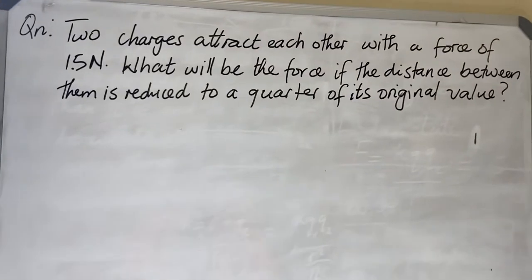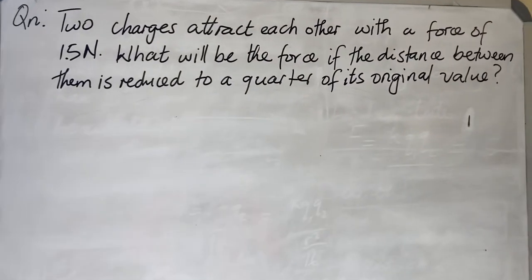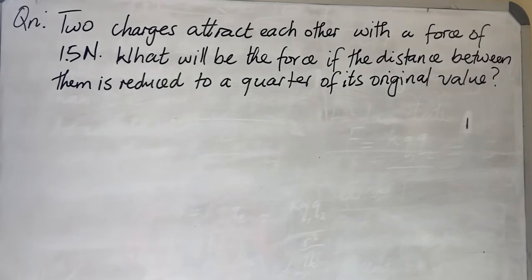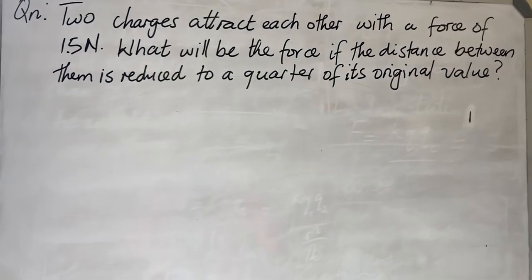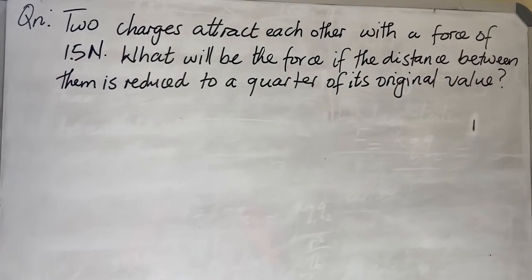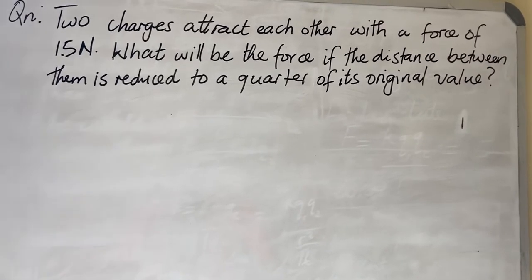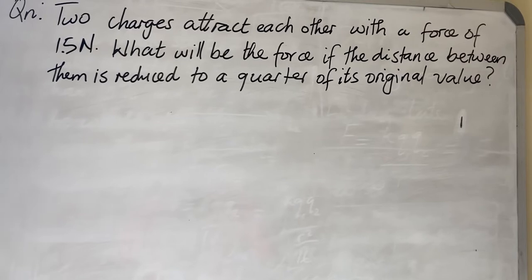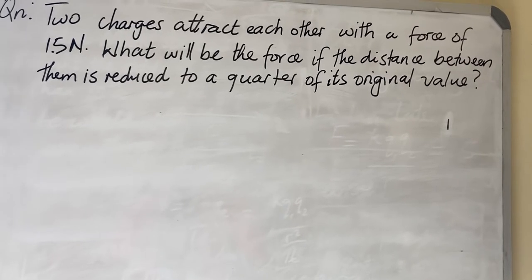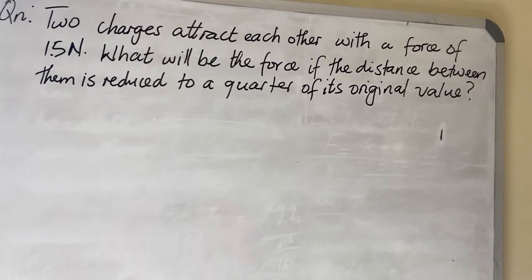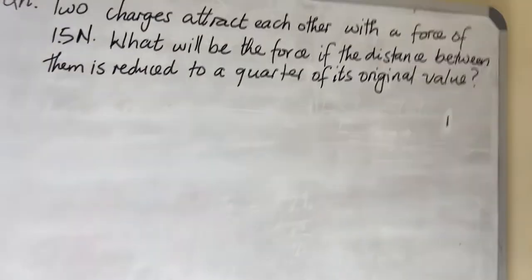Good day ladies and gentlemen, okay I'm back again. I've been asked this question by someone, they asked me like how would we solve something like this. So the question reads: two charges attract each other with a force of 1.5 newtons, what will be the force if the distance between them is reduced to a quarter of its original value?